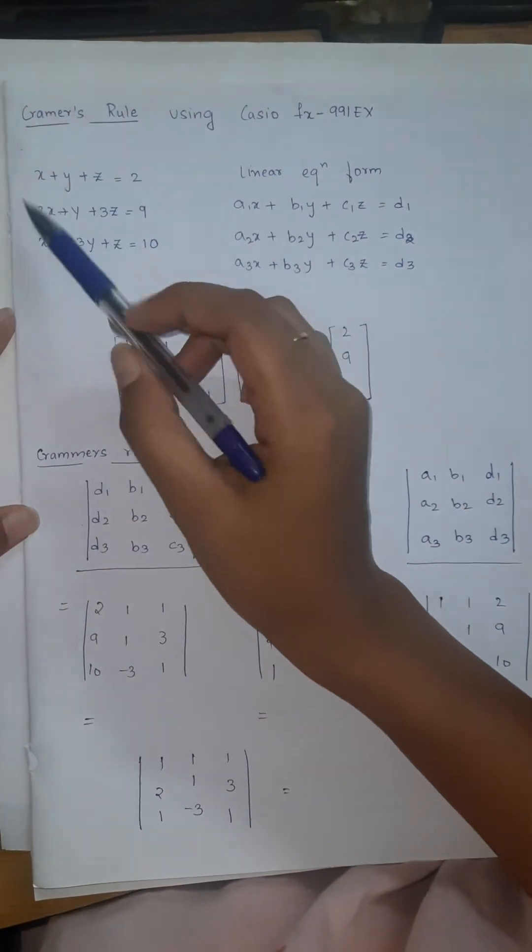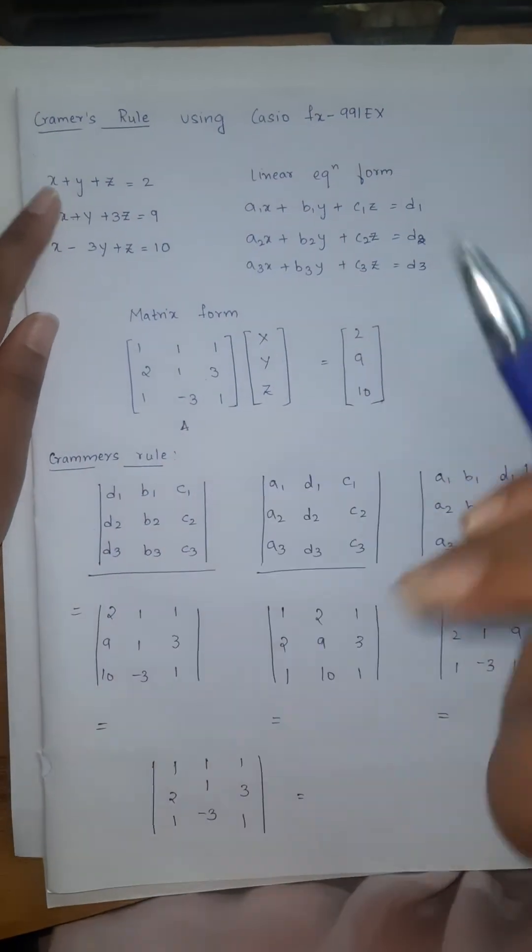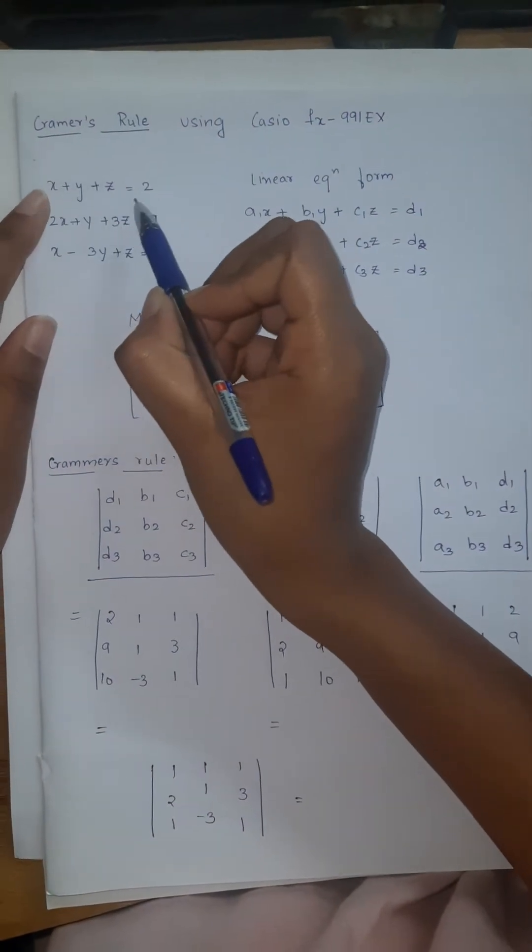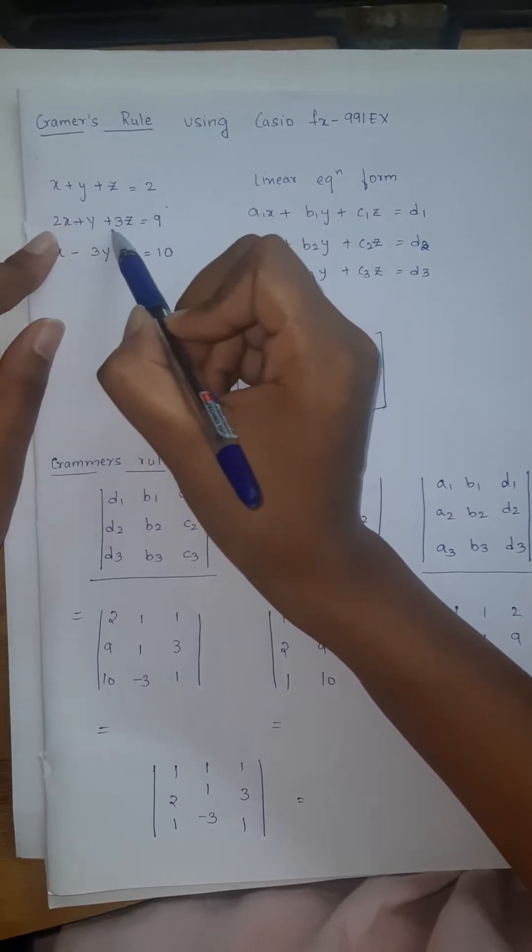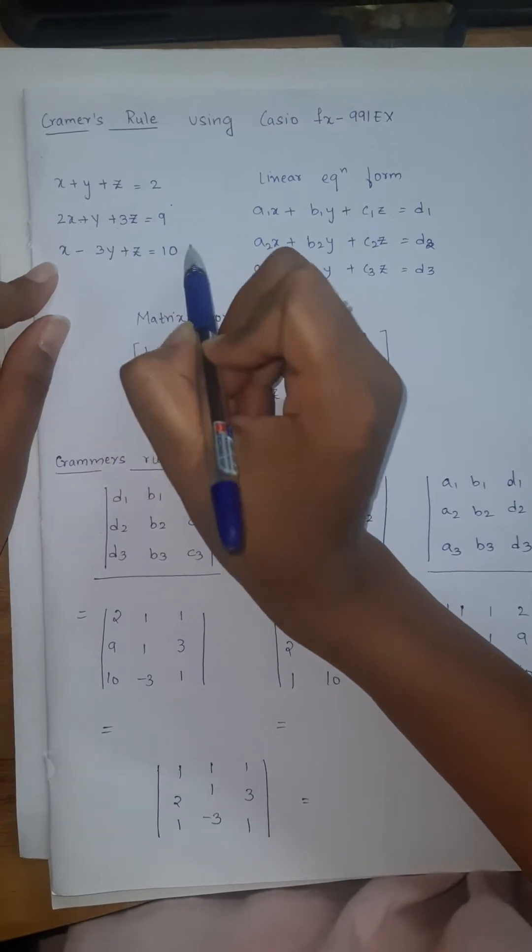These are the three equations today we are going to consider and find the answer for. X plus Y plus Z equals 2, 2X plus Y plus 3Z equals 9, X minus 3Y plus Z equals 10.